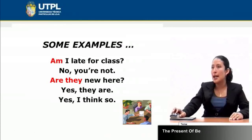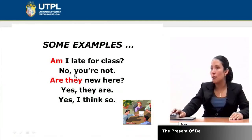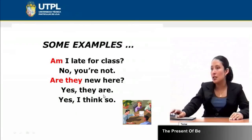Let's see the first example: 'Am I late for class?' — 'No, you are not.' Notice that in order to answer these kinds of questions, you use a short answer: 'no,' plus 'you are not' in the negative way. 'Are they new here?' — 'Yes, they are.' It is not necessary to repeat the full context. For example, saying 'Yes, they are new here' is not common in English because the grammar structure says we use a short form, even if it is a negative or affirmative answer — or 'Yes, I think so.'